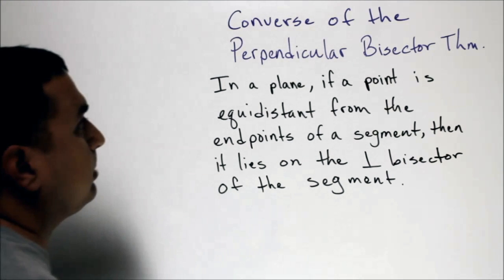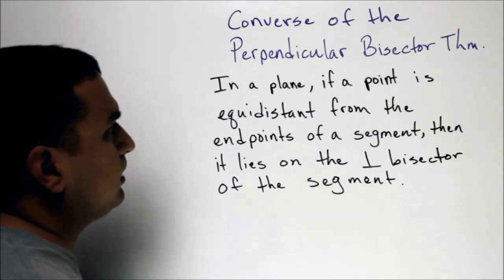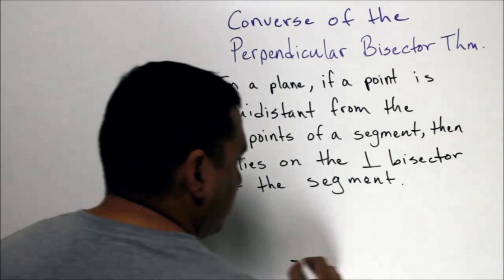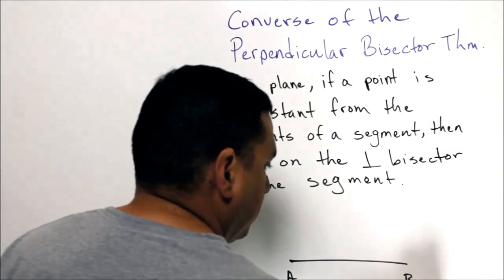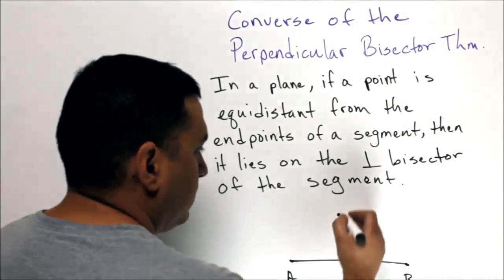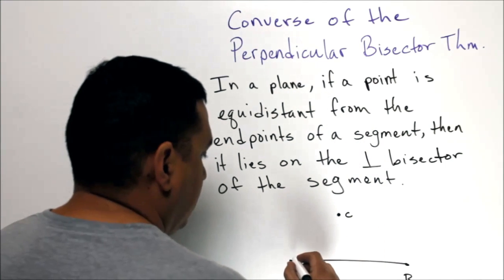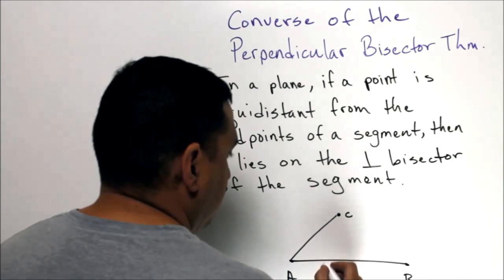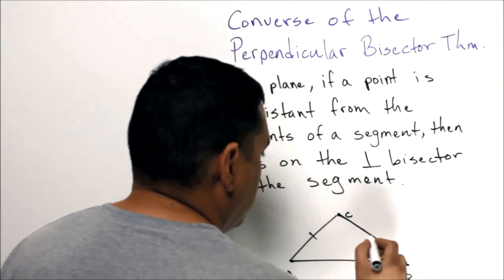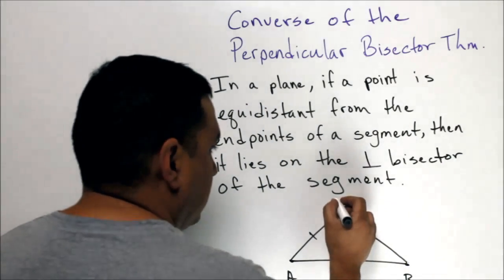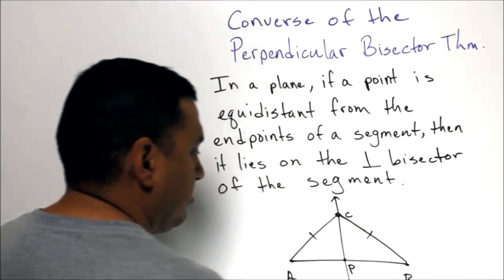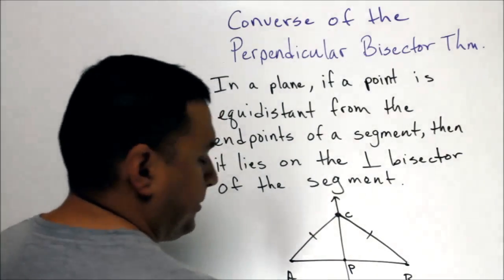Now we have the converse of the perpendicular bisector theorem, which says that if a point is equidistant from the endpoints of a segment, then we know it's on the perpendicular bisector of that segment. If I have segment AB and I pick a point C where the distance from C to A equals the distance from C to B, then I know that point C is on the perpendicular bisector of segment AB.